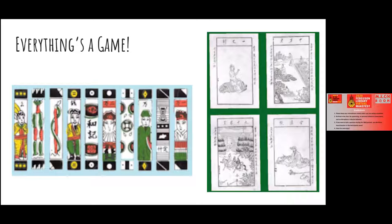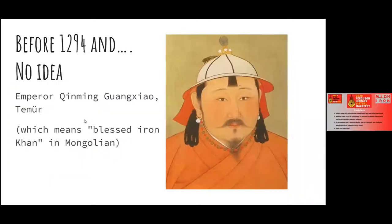A lot of people suggest that the paper money of the time is actually what the Chinese would use as playing cards, because you'd have numbers etched on small pieces of paper around the same size. The best guess for when playing cards started is sometime around 1000 AD and definitely before 1294, which is when in the Yuan dynasty we get the first clear mention of playing cards.